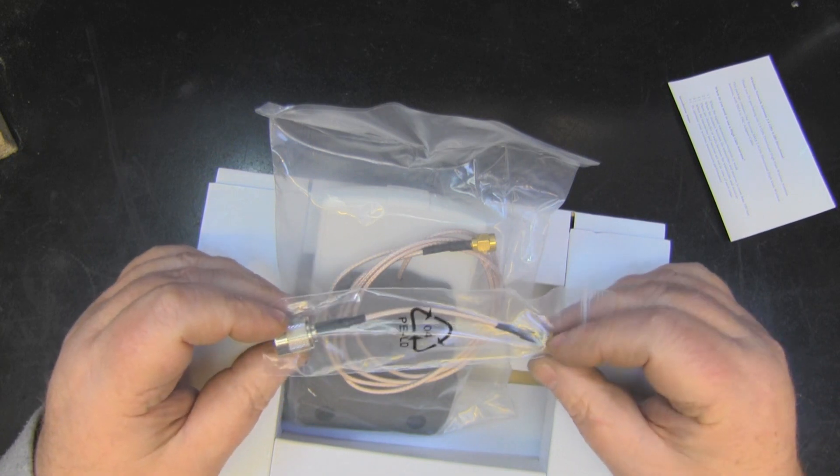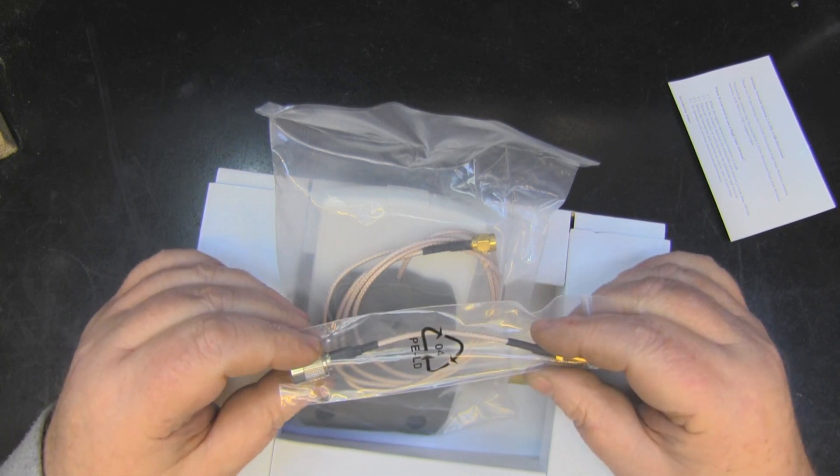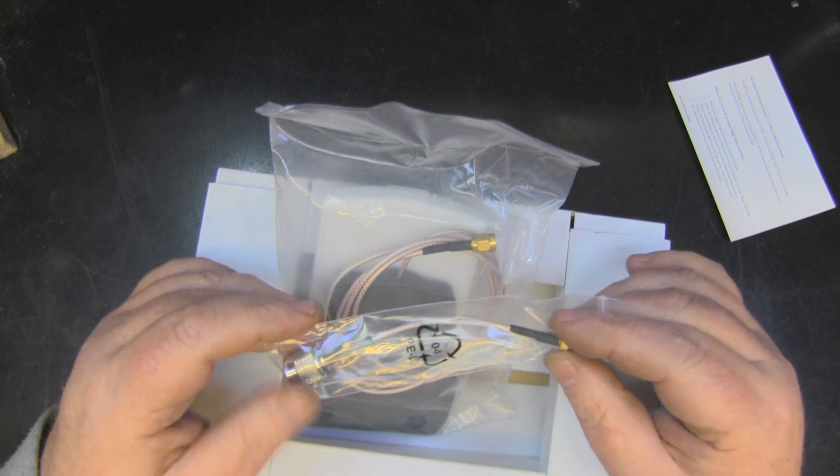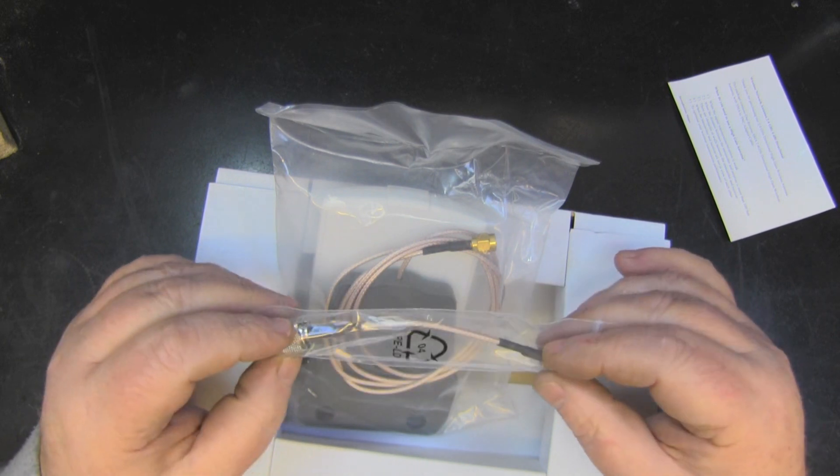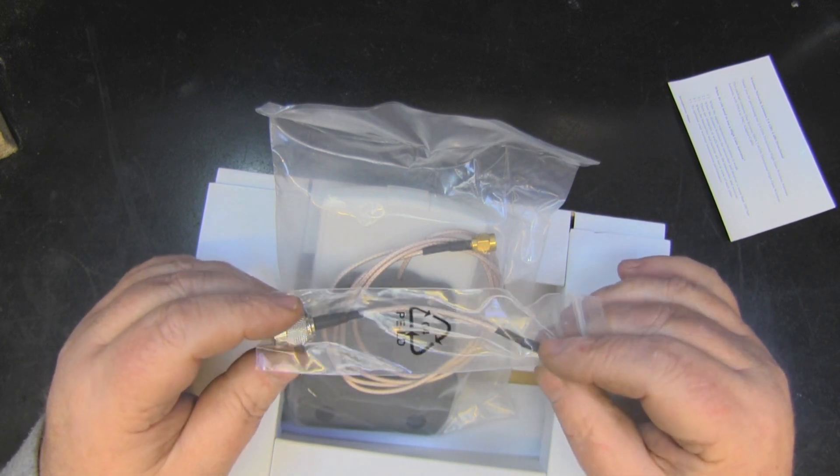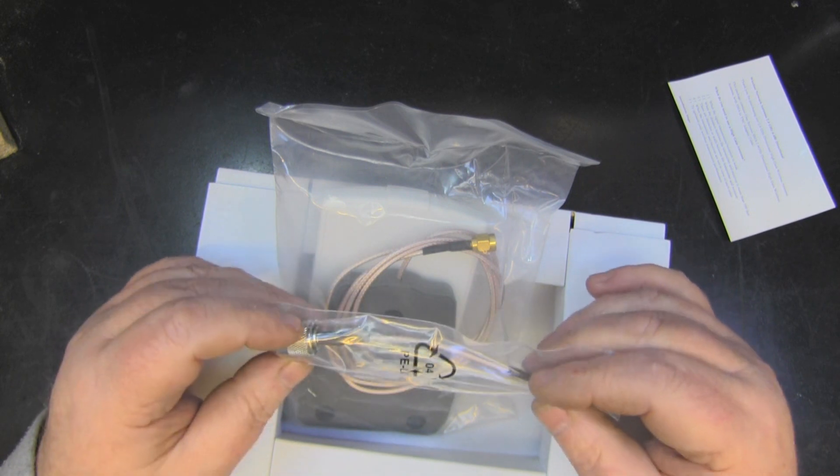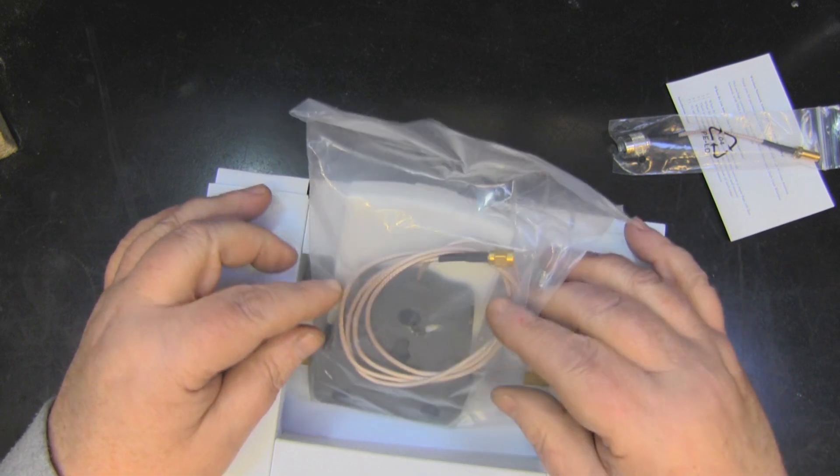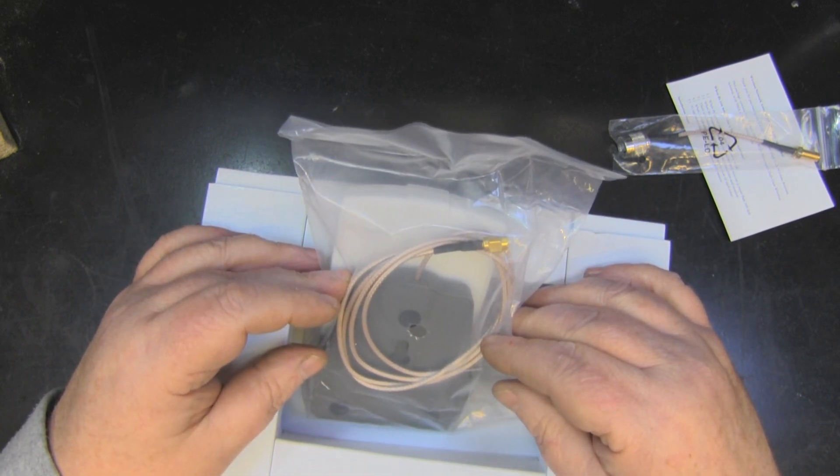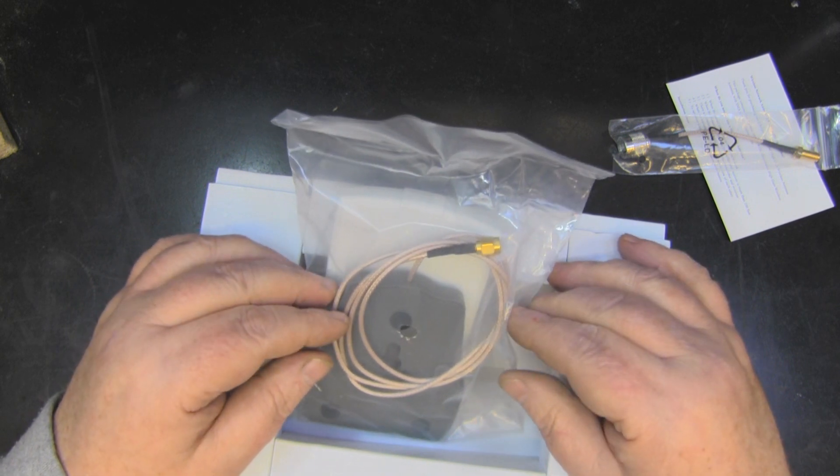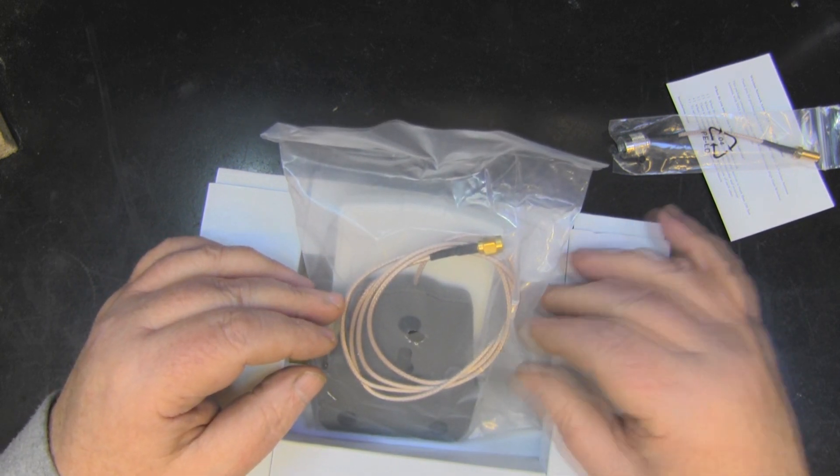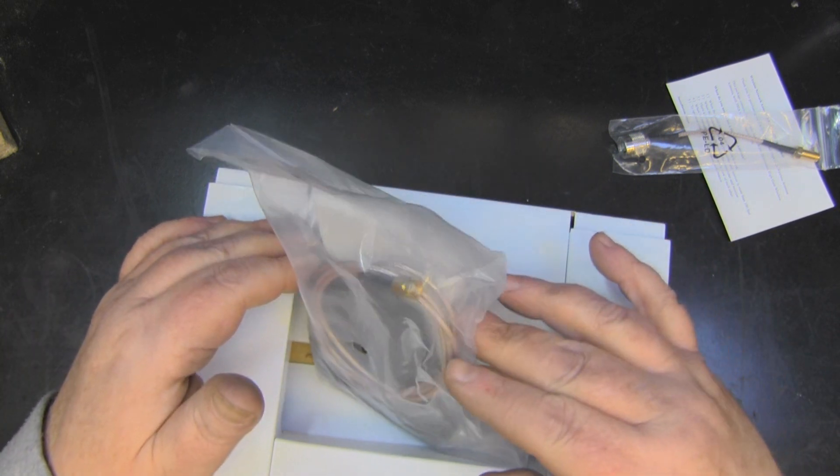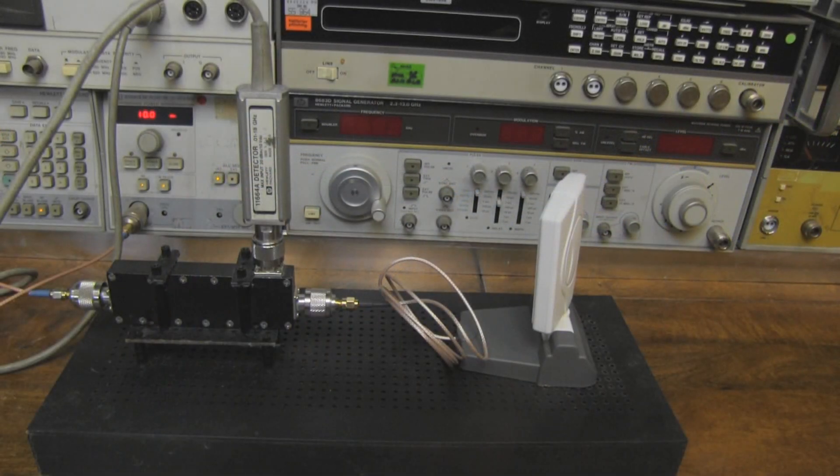But you do get this nice little TNC to SMA pigtail adapter here. If you wanted to connect it up to a router that has TNC, most adapters don't have TNC they're all SMA, but a little pigtail adapter like this you can probably end up paying two or three pounds for on eBay on its own, so definitely worth it for that. And the coax in general looks pretty good quality, similar to what I use here in the lab on a lot of my builds. Certainly not the speaker wire junk that you often find with these cheap antennas.